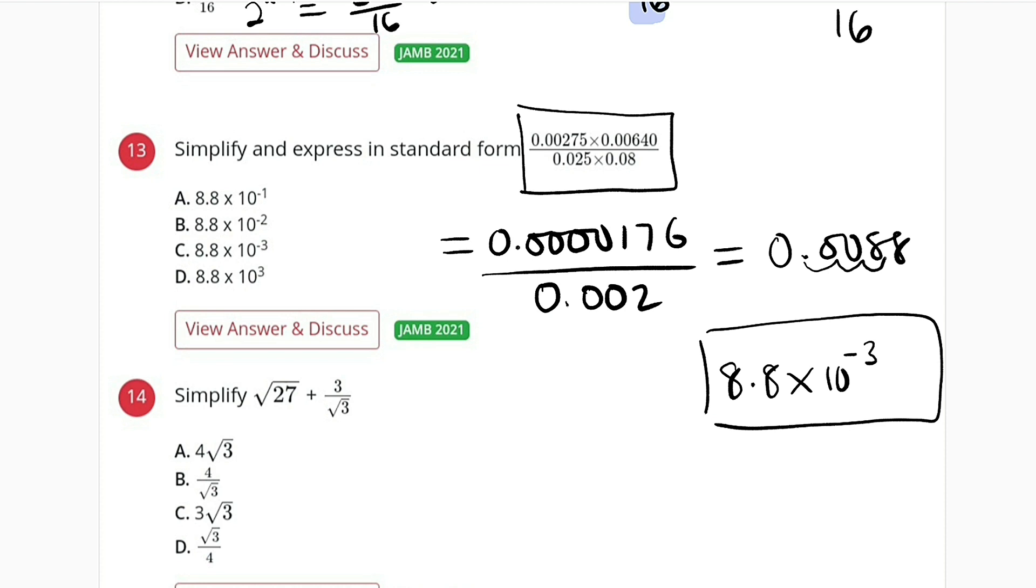Because we are coming from the left to the right, so the power is negative. But if you're coming from the right to the left, the power will be positive. So we have option C.